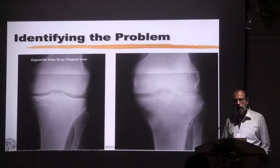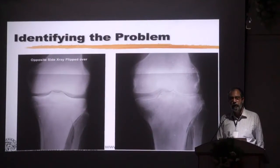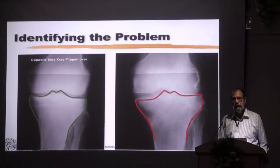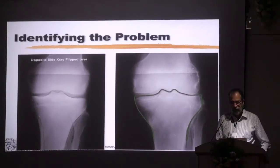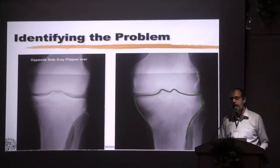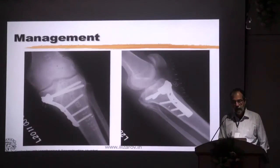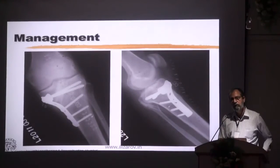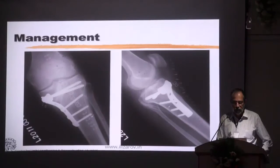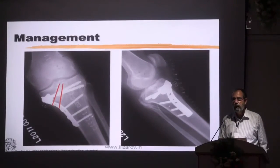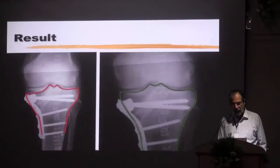How do you identify the problem? Is it some laxity in the joint causing that opening up, or is it a malunited fracture? If you do a tracing of that, similarly do a tracing of the normal side and just flip it over, you will be able to see very clearly that it is the medial condyle which has depressed. If you are able to identify the problem, correcting it is not a big issue. You have to do an oblique osteotomy which exits around the tibial spines, raise that, and put in a large tricortical graft.